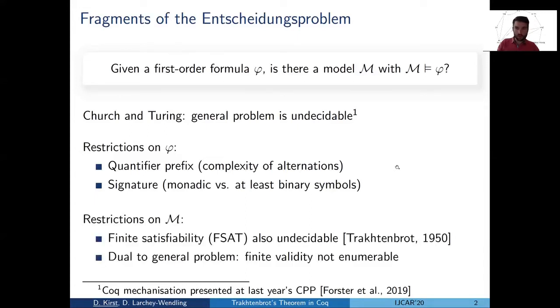On the other hand, one can also look at semantic restrictions. The restriction we're concerned with is the restriction to only finite models. Here Trachtenbrot has proven in 1950 that the finite satisfiability problem is still undecidable. And it's somewhat dual to the general case where finite validity is not even enumerable, meaning there's no complete deduction system for finite validity.